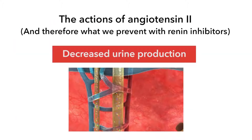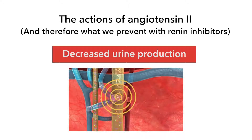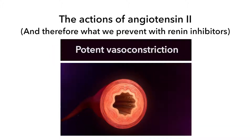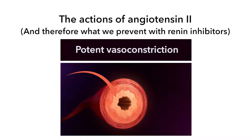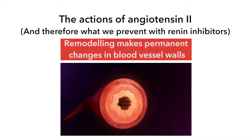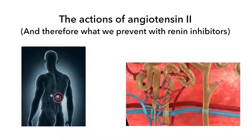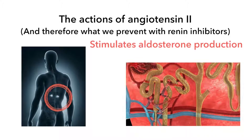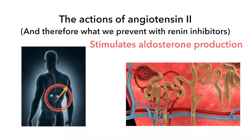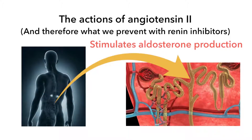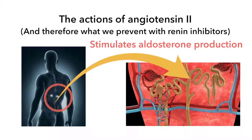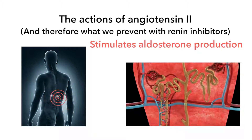Angiotensin-2 directly stimulates the kidneys to retain more water. It binds to endothelial cells across the body, causing potent vasoconstriction, which eventually leads to chronic remodeling changes in the blood vessels. Angiotensin-2 also contributes to ventricular remodeling of the heart, and binds to receptors on the adrenal gland, promoting secretion of aldosterone — the salt saver — which causes the kidneys to retain more salt and water, raising blood pressure further.